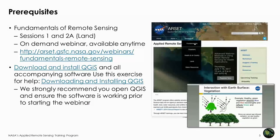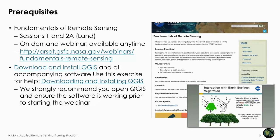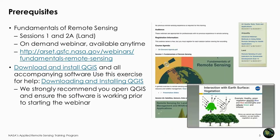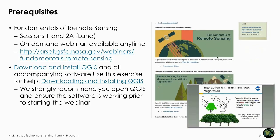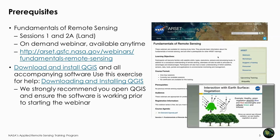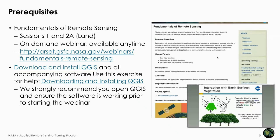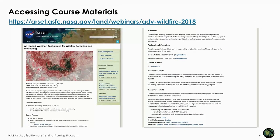There are two prerequisites for this course, although they mostly apply to the webinar offered last week. You must have completed the Fundamentals of Remote Sensing sessions available on our website or something equivalent. If you did not participate in the webinar last week and plan on watching the recording, you must also download and install QGIS. You can access all course materials on our website listed here.